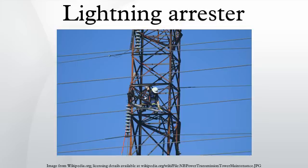A lightning arrestor may be a spark gap or may have a block of a semiconducting material such as silicon carbide or zinc oxide. Thyrite was once a trade name for the silicon carbide used in arrestors. Some spark gaps are open to the air, but most modern varieties are filled with a precision gas mixture, and have a small amount of radioactive material to encourage the gas to ionize when the voltage across the gap reaches a specified level. Other designs of lightning arrestors use a glow-discharge tube connected between the protected conductor and ground, or voltage-activated solid-state switches called varistors or MOVs.